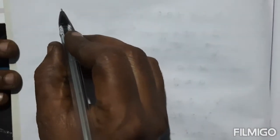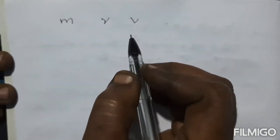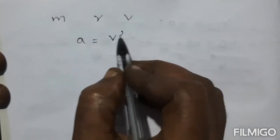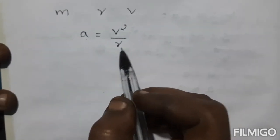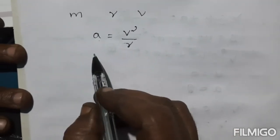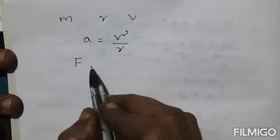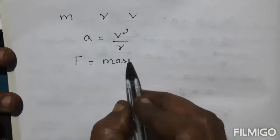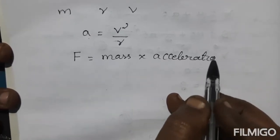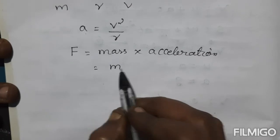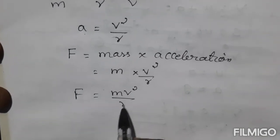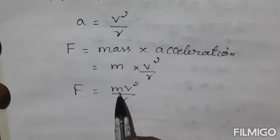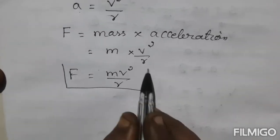Let us consider a body moving along a circular path of radius R with velocity V. The centripetal acceleration is given by A equal to V square divided by R. Here A means acceleration, V means velocity, and R means radius. The magnitude of the centripetal force F — you know the force formula: mass into acceleration. So centripetal force F equal to M V square divided by R, where M is mass, V is velocity, and R is radius.